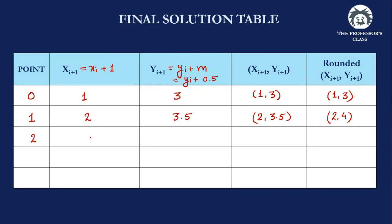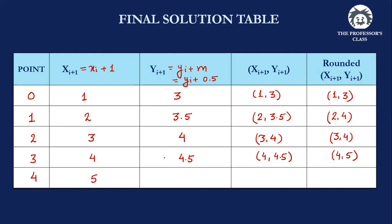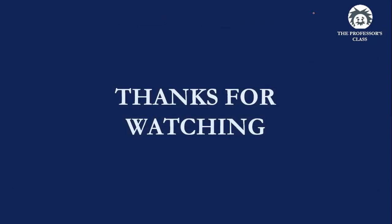Continuing: incrementing x by 1 and y by 0.5 each time — the next point is (3, 4), no rounding needed. Then (4, 4.5), which rounds to (4, 5). Finally (5, 5), which is the endpoint. So the five pixel coordinates are (1, 3), (2, 4), (3, 4), (4, 5), and (5, 5). Illuminating these pixels generates the line from (1, 3) to (5, 5). This is how the DDA algorithm works for both slope cases.